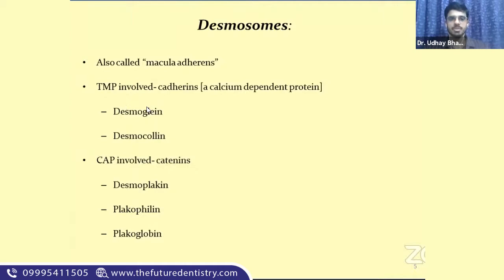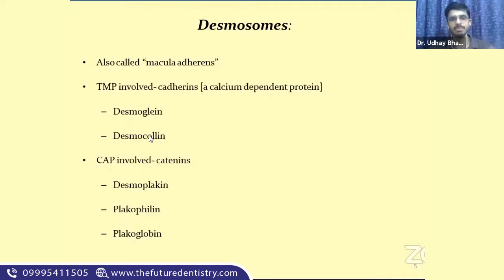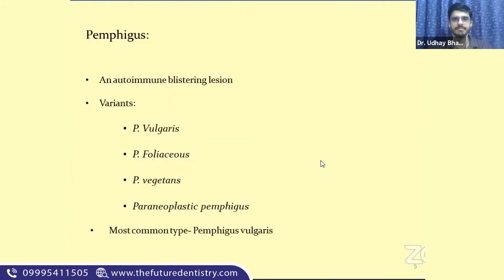Desmoglein is the most important transmembrane protein for desmosomes. You also have desmocollin. For cytoplasmic adapter proteins, remember the prefix or suffix 'plaque' as a memory aid. The cytoplasmic adapter proteins for desmosomes are desmoplakin, plakophilin, and plakoglobin. So: transmembrane — desmoglein; cytoplasmic adapter — anything with 'plaque' such as desmoplakin, plakophilin, and plakoglobin. The most important molecule to definitely remember is desmoglein.